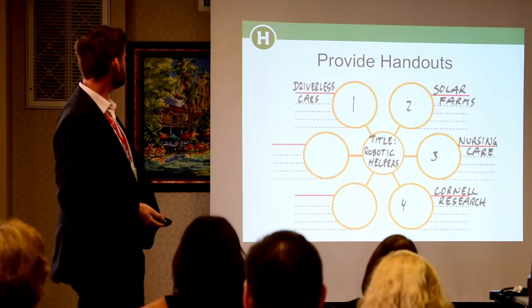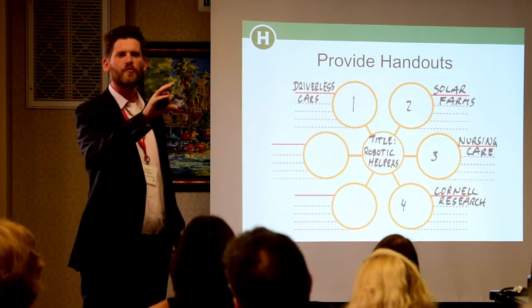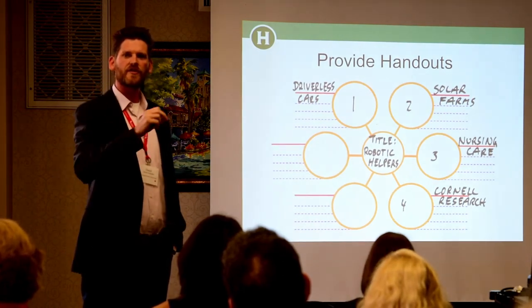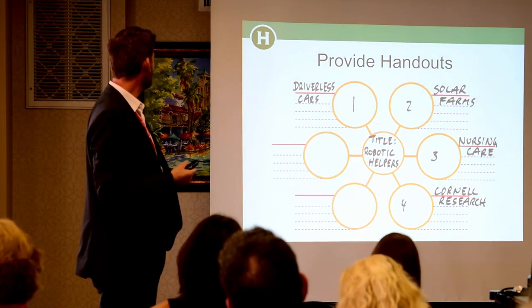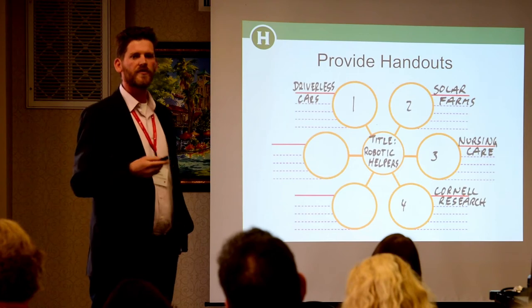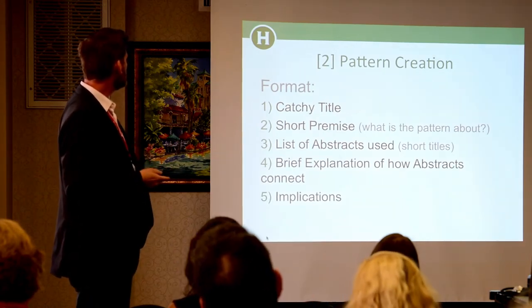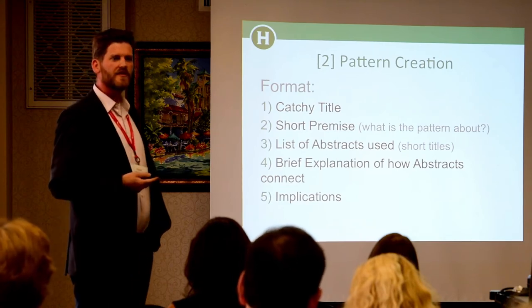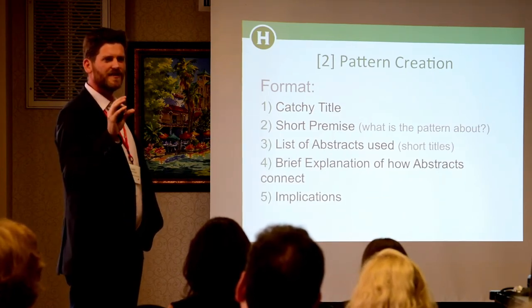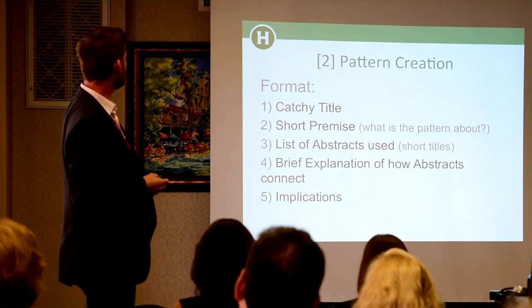So as a pattern, we're looking at health enablers at home. I provide handouts to get students thinking in terms of patterns — similar to mind mapping, where you put a central premise in the center of a blank page and see how different abstracts connect to it. Another example was called 'Robotic Helpers,' including driverless cars, nursing robots, robots on solar farms, and Cornell's robotics research. For the deliverable, I ask students for a catchy title, a short premise, a list of the abstracts used, an explanation of how they connect, and some implications. I have a pattern rubric and look for coherence.